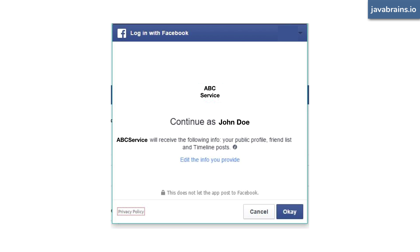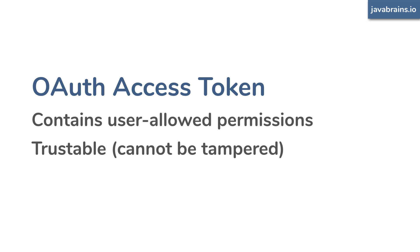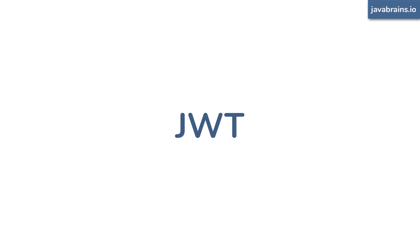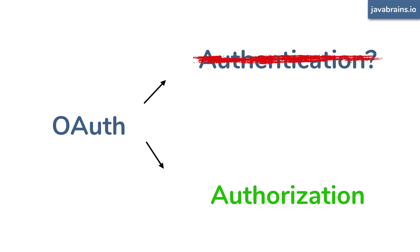What does this access token look like? It has to be a token that contains information about all the allowed permissions and something the service can verify. If you create a token yourself and give it to Google, it obviously won't accept it — it has to be a secure token that Google itself created and gave you. The token format used is called JWT. Now it's also obvious why OAuth is used for authorization and not authentication: in this case, the user is already authenticated to both services. The problem being solved is how to authorize one service with another.